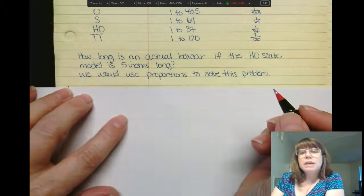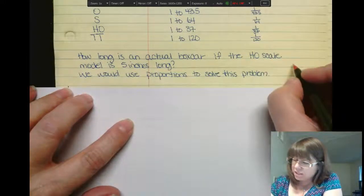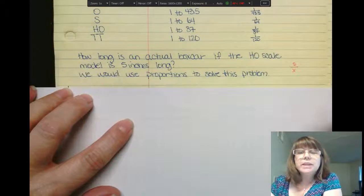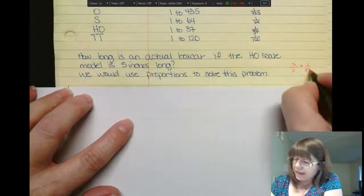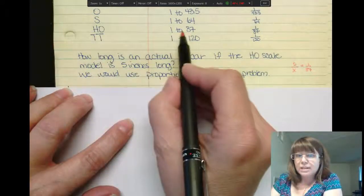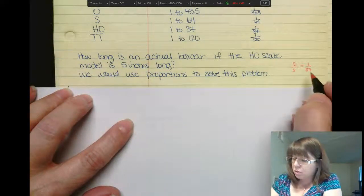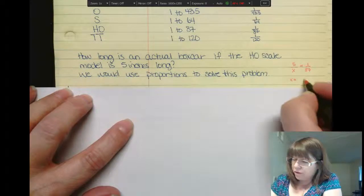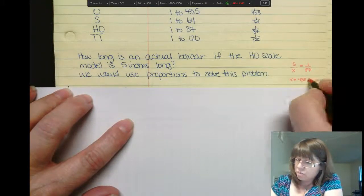So how I would set up the problem is, we have a scale model, an HO scale, is 5 inches long. So we know it's 5 inches. We don't know how large the real size of the train is. But we do know the scale is 1 to 87. So on the HO scale it's 1 to 87. I'm going to use what I know in proportions to multiply my extremes and my means. So my x will equal 35 carry the 5, 43, 435 inches long should be a real box car.